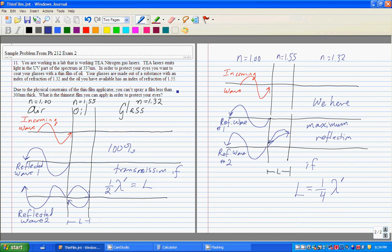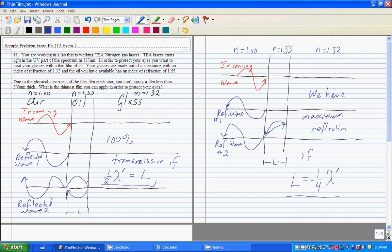We've discovered that if the thickness of the film is one-half the wavelength of light in the oil, we get total transmission. If the thickness is one-quarter the wavelength of light, we get total reflection. This total reflection is what we want, so L equals one-quarter lambda prime.